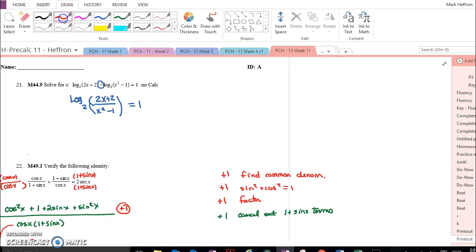Now that we've condensed our log, we can exponentiate both sides, and you'll need to exponentiate both sides in order to get rid of your logs. So now we're looking at 2x plus 2 over x squared minus 1 equals 2.